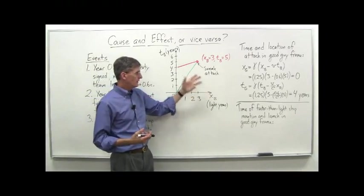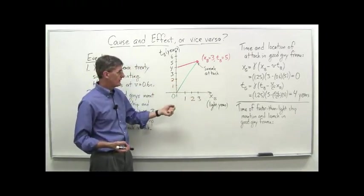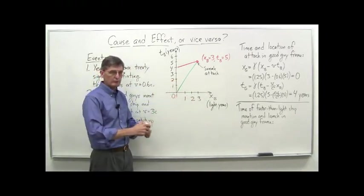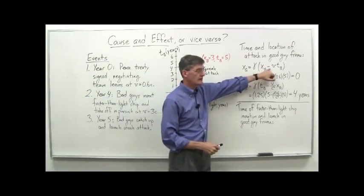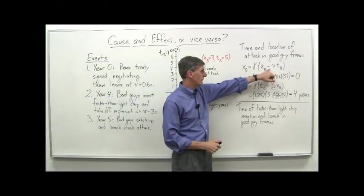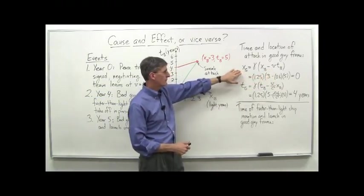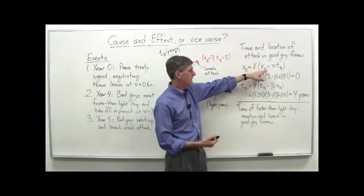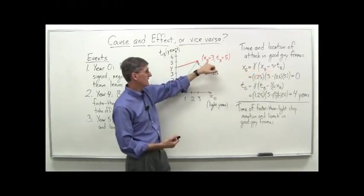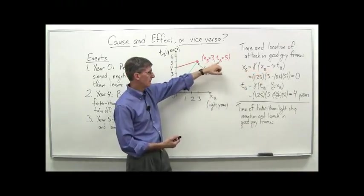So the difference in the two frames of reference is 0.6c. And also note that from the good guys' perspective, the bad guys' planet is moving to the left in the negative x direction. So we use the minus sign version of the Lorentz transformation. So the x location of the sneak attack here is going to be gamma x sub b minus vtb, where we've got x sub b and t sub b here, three and five.